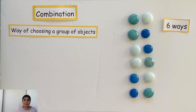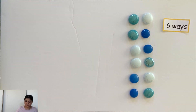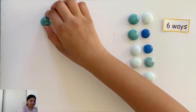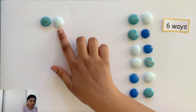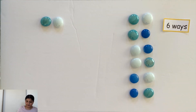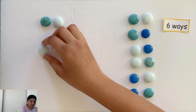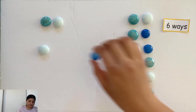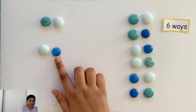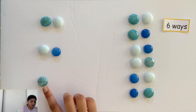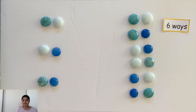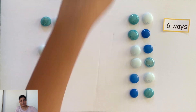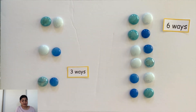How many combinations are there? I can have the light blue marble with the dark blue marble, the light blue marble with the white, or the dark blue with the white. As you can see, there are three ways, or three different combinations.